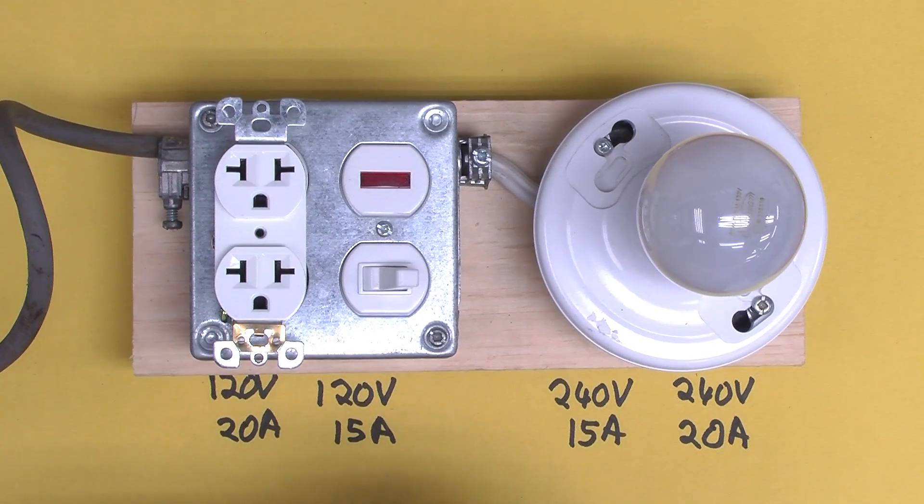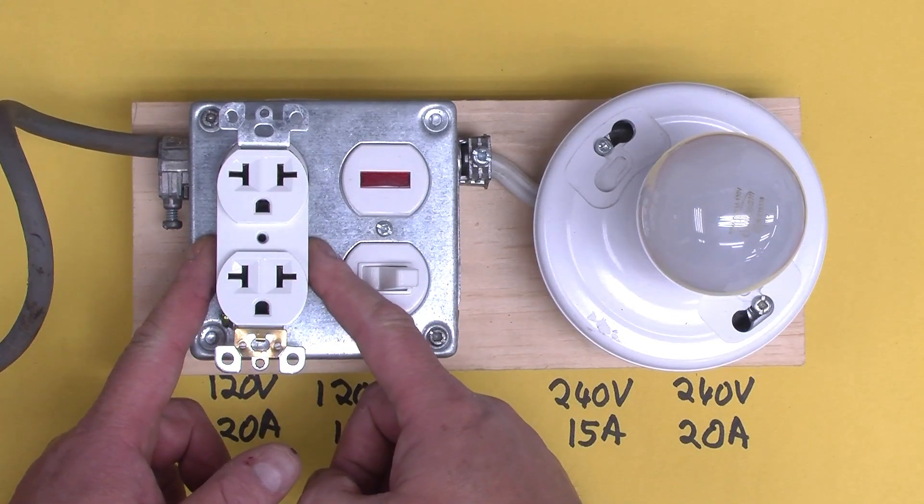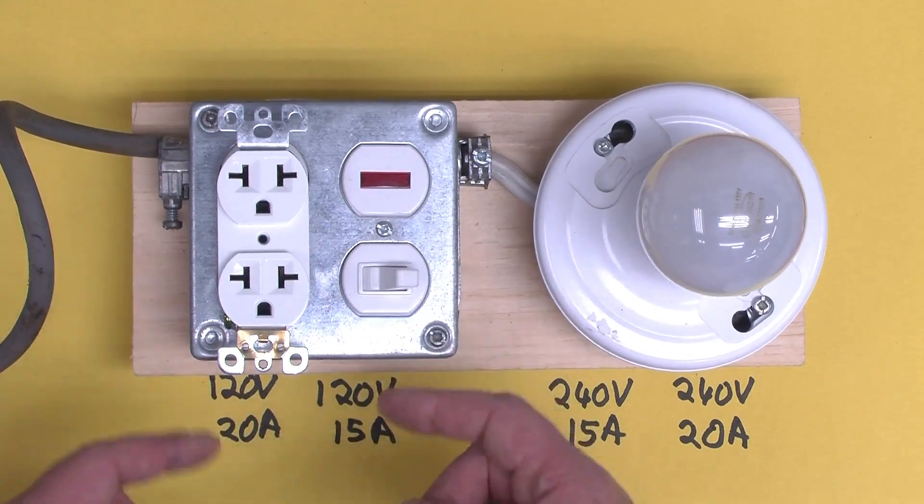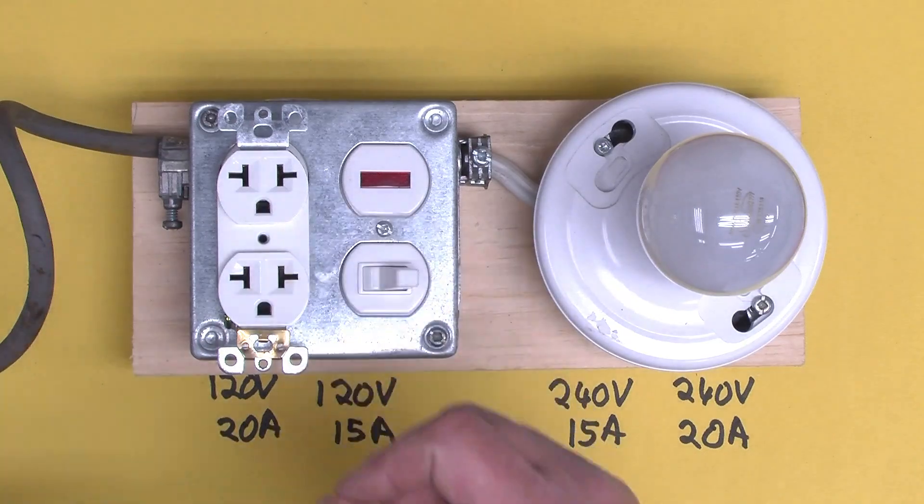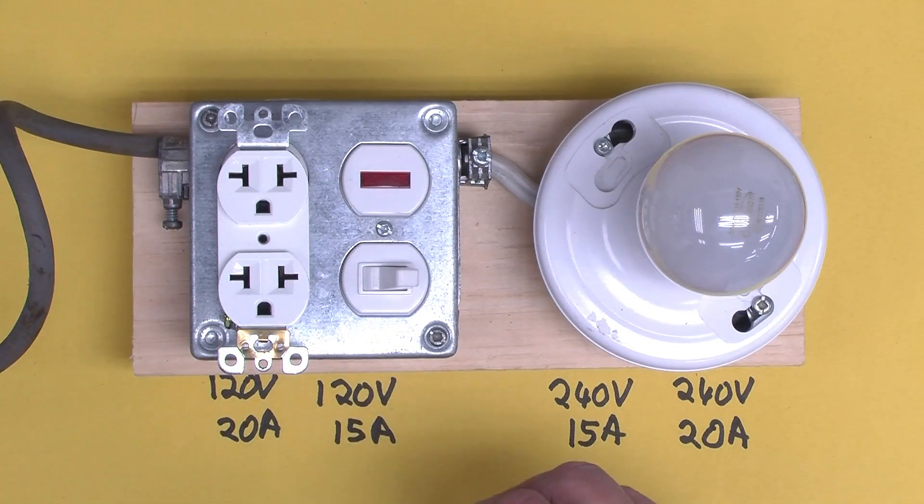It might be kind of useful to have a receptacle like that so you could even plug in a 240 volt item into your current-limited output, and even if it's only 120 volts, use that for troubleshooting with a slightly lower voltage situation.